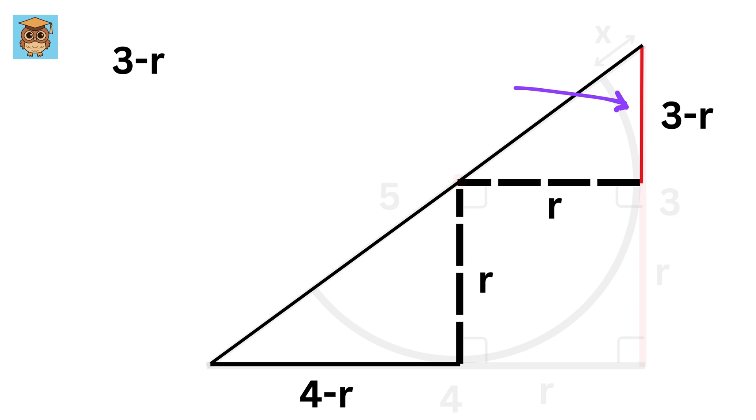Therefore both of these will be similar triangles. Thus this length, which is 3 minus R, over this length, which is R, will be equal to this length, which is R, over this length, which is 4 minus R.